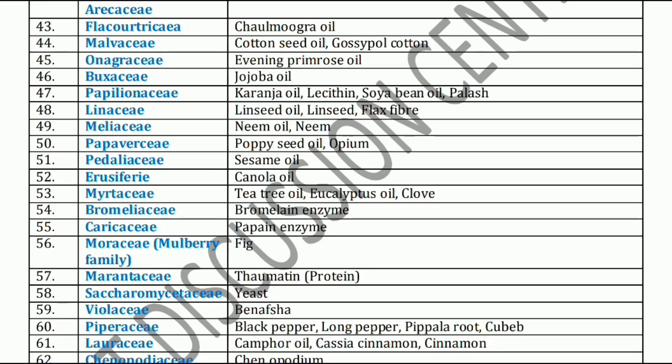Now, Myrtaceae family. Myrtaceae family includes Tea tree oil, Eucalyptus oil, and Clove. Next family is Bromeliaceae family. Bromeliaceae family includes Bromelain enzyme. Next, Caricaceae family. Caricaceae family has Carica papaya — Carica papaya yields Papain enzyme.